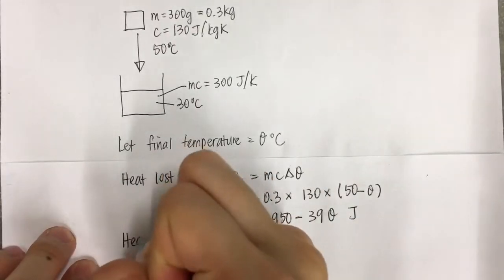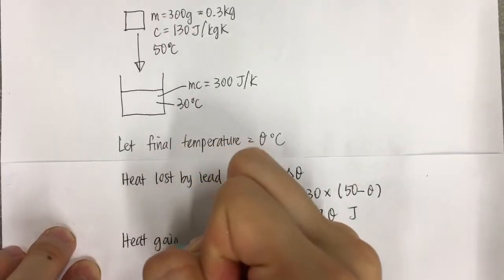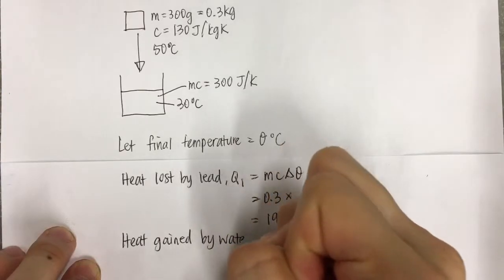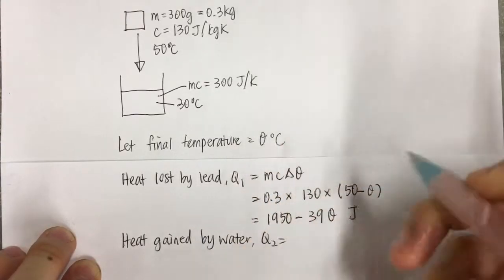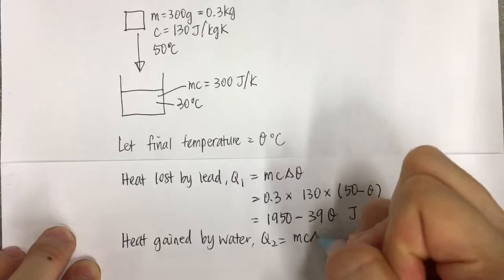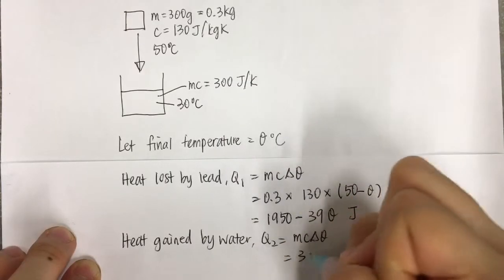Then heat gained will be by the water. Q2 equals mcΔθ. MC is 300.